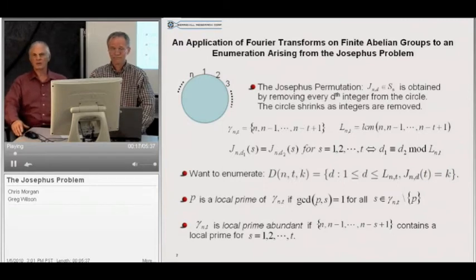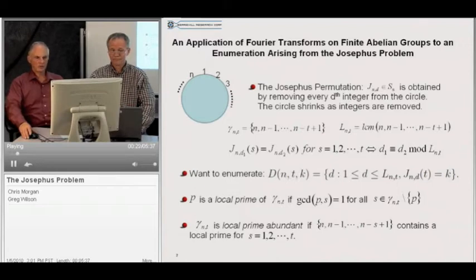We begin by defining the Josephus permutation, which, following the late Irving Kaplansky, we denote by J sub n d. Arranging the positive integers 1 through n clockwise on a circle, we remove every d-th integer, shrinking the circle as we go. The order in which the integers are removed determines a permutation of the symmetric group, which we call the Josephus permutation.